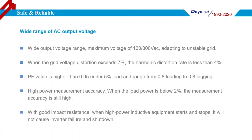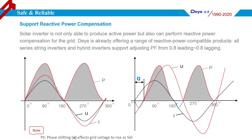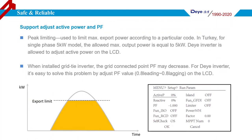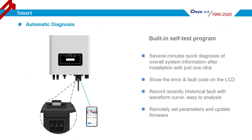In order to identify problems with inverters, there is a self-test program for each series of products. When a fault occurs, it will show the fault code on the LCD and on the monitoring platform as well, if the datalogger is connected.